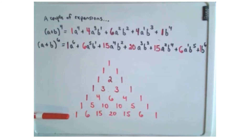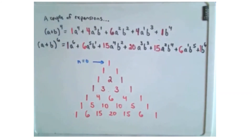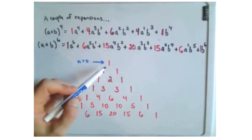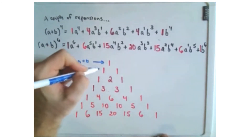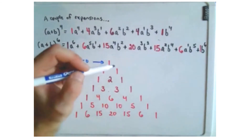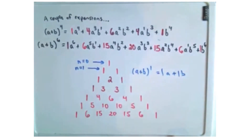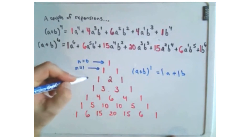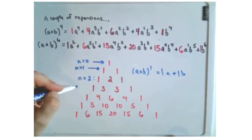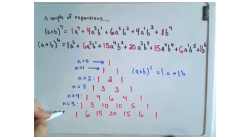Those are exactly the numbers in this row of Pascal's triangle. The first row corresponds to the exponent of 0 — (a + b) to the 0 gives just 1. The second row corresponds to n equals 1: (a + b) to the first gives 1a plus 1b. Then counting down: the third row goes with exponent 2, then exponent 3, exponent 4, exponent 5, and the bottom numbers go with exponent 6.